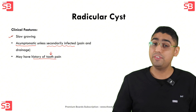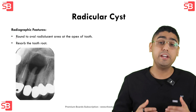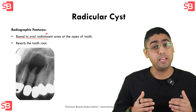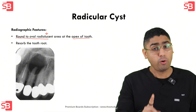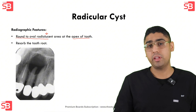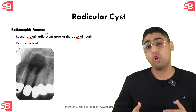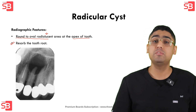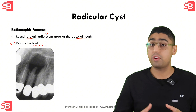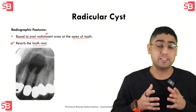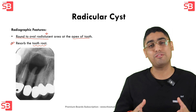For the radiographical features of a radicular cyst, we see a round or oval radiolucent area located at the apex of the root of a non-vital tooth. An important detail is that as the cyst grows, it starts to resorb the tooth's root. If you observe signs of root resorption on a radiograph — like a shortened or irregular root structure — it can serve as a hint to the presence of a radicular cyst.